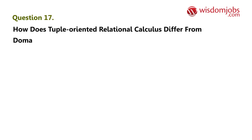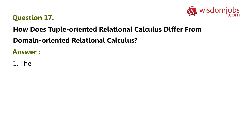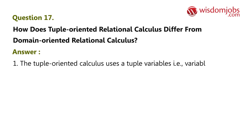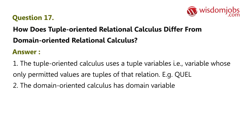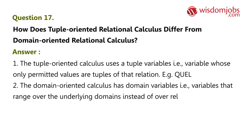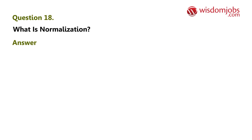Question 17: How does tuple oriented relational calculus differ from domain oriented relational calculus? Answer: One: The tuple oriented calculus uses tuple variables, i.e., variables whose only permitted values are tuples of that relation — example: QUEL. Two: The domain oriented calculus has domain variables, i.e., variables that range over the underlying domains instead of over a relation — example: ILL/Deduce.